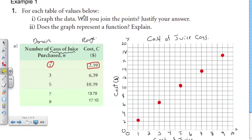Now the question asks, will we join the points? And does the graph represent a function? Well, a function is a relation where each domain is associated with only one element in the range. We can see by looking at this table that that is true. Each domain is only associated with one element in the range, so this is a function.